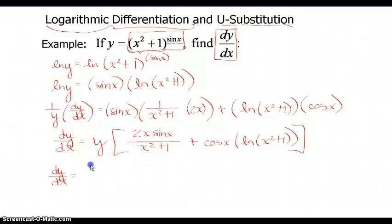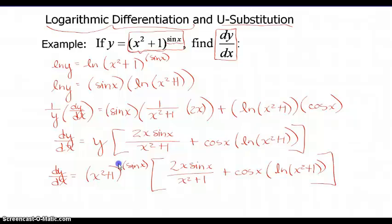Now I substitute back in the original function in terms of x for y. Now I have the derivative of y with respect to x. This is (x²+1)^(sin x) times what we found with our product rule plus cos(x) times ln(x²+1). So there's the derivative with respect to y of that function. We'll practice some of that on our homework.